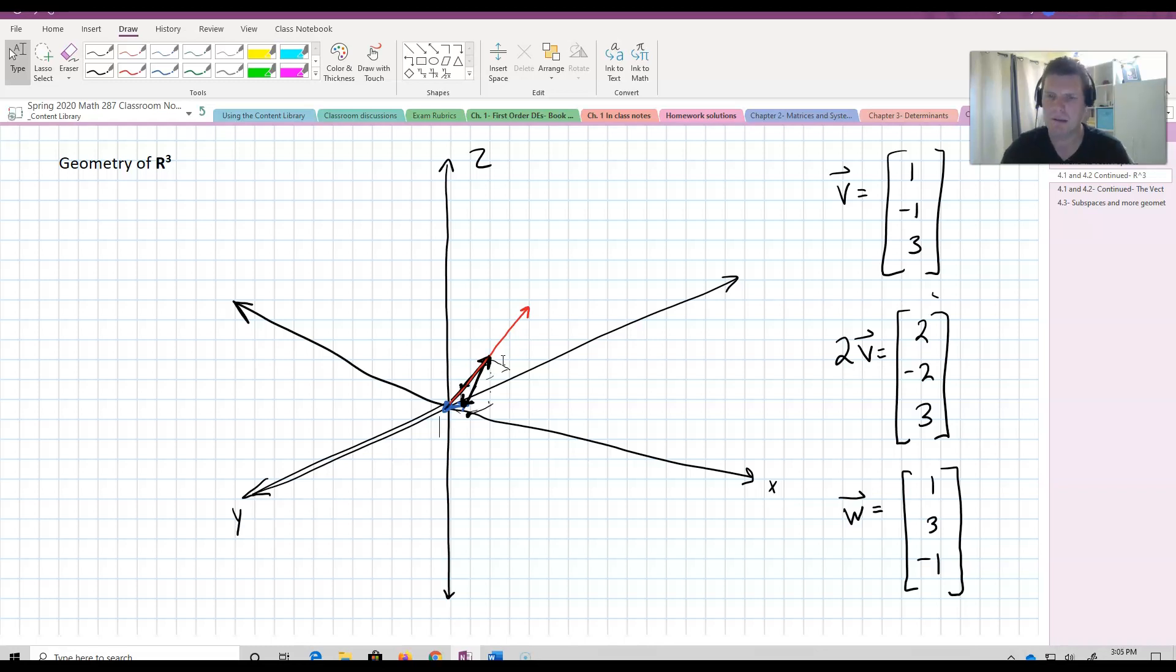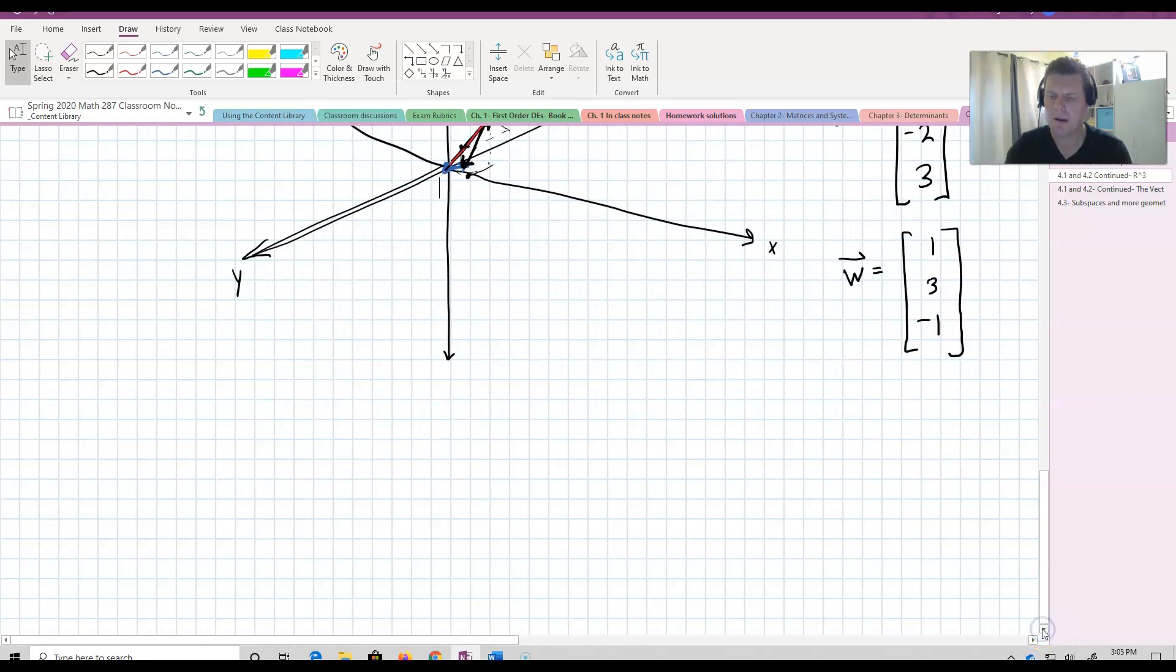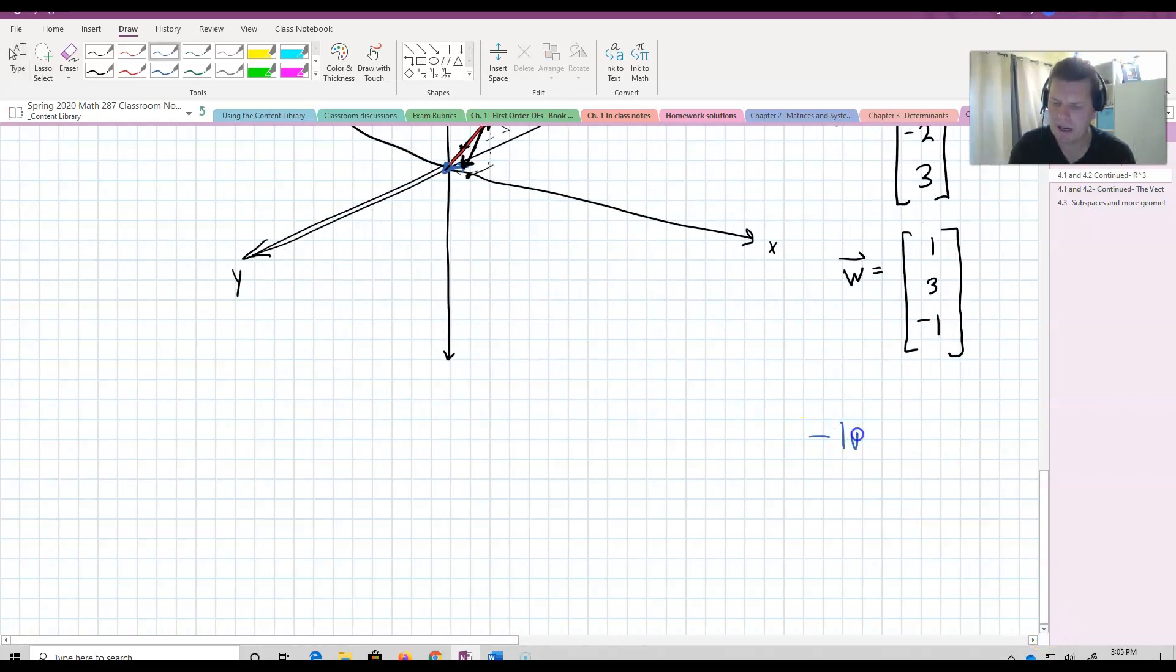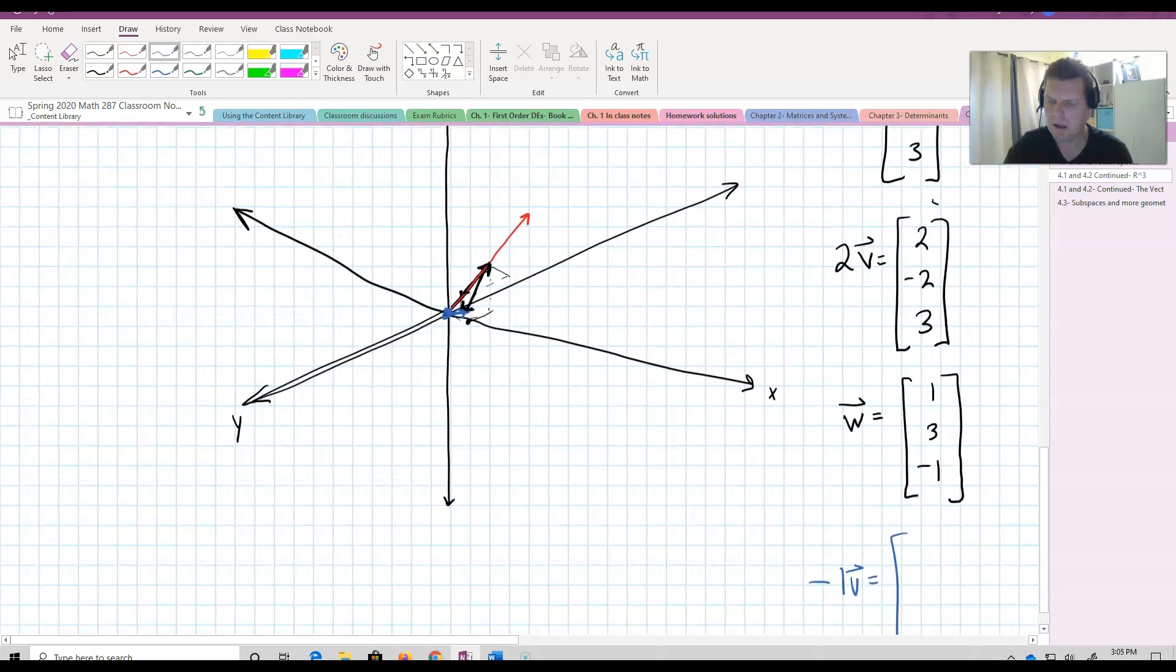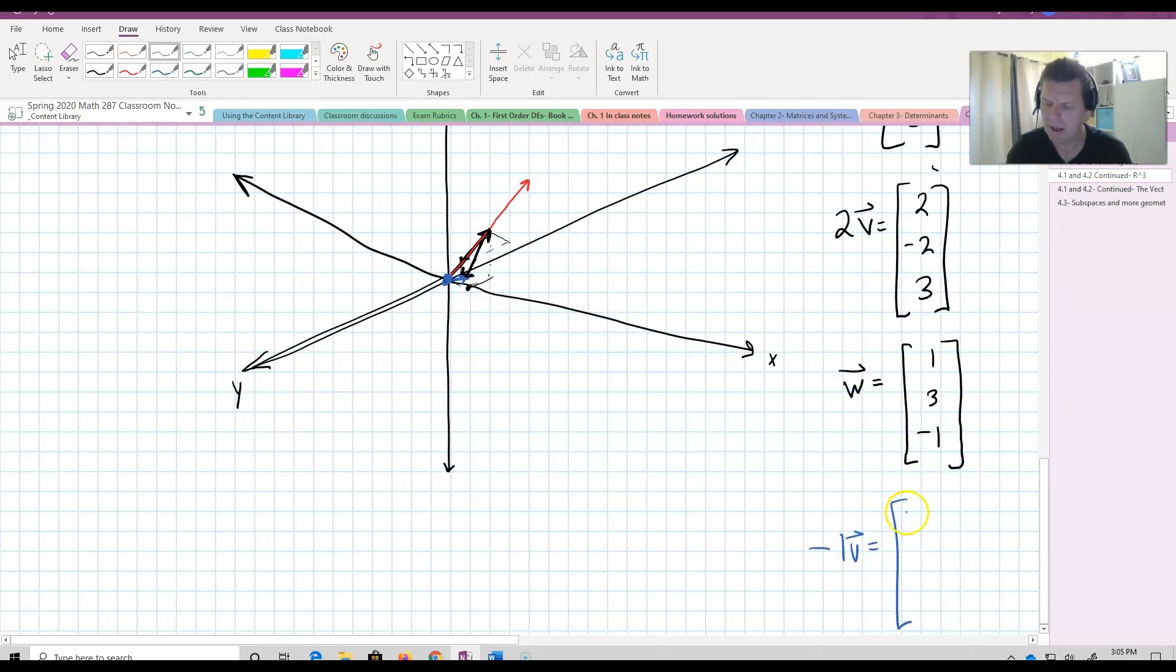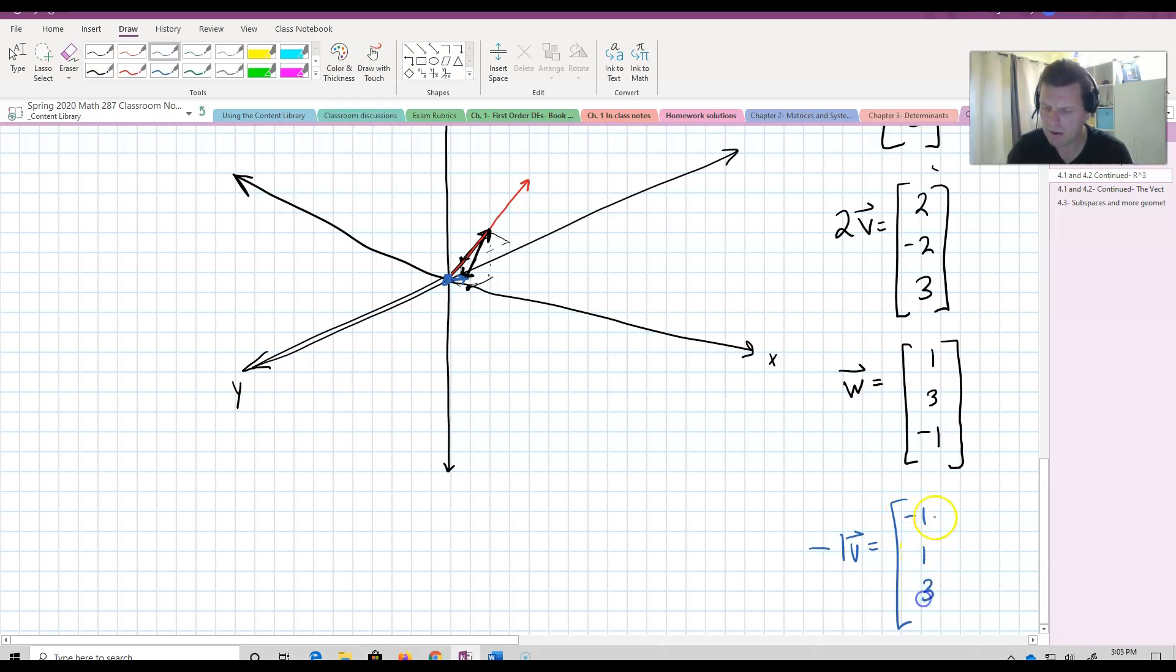If I multiply my vector, negative 1 times V, equal to negative 1, 1, negative 3. That one is going to be in the exact opposite direction of my original vector. But, same length. Identical length, opposite direction.